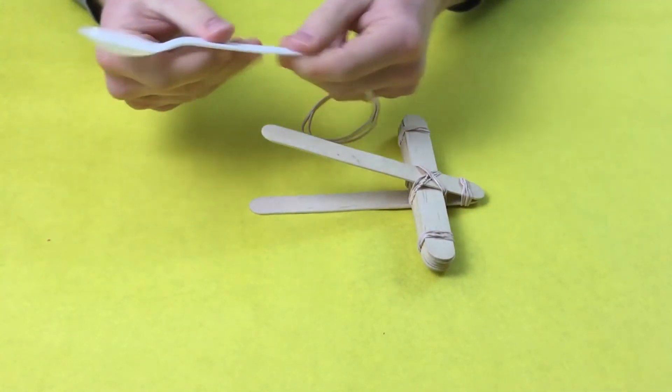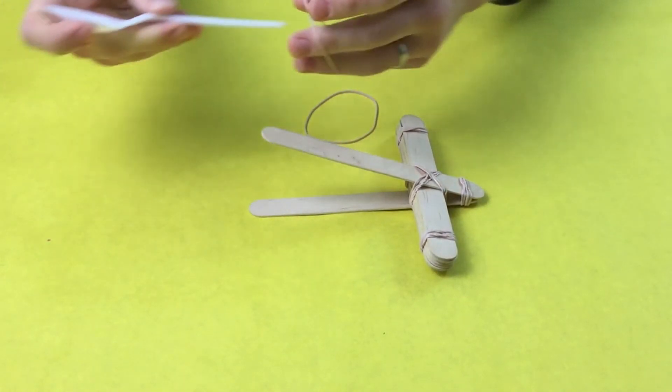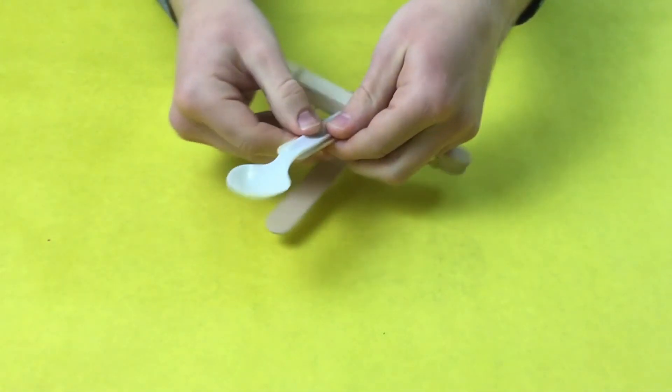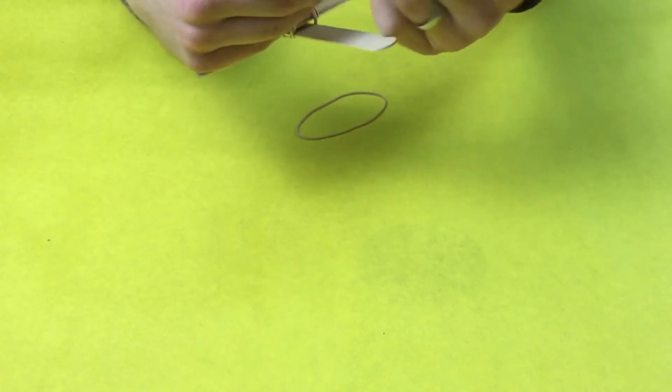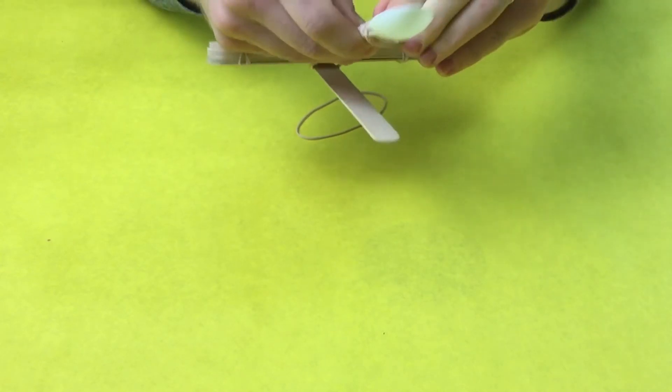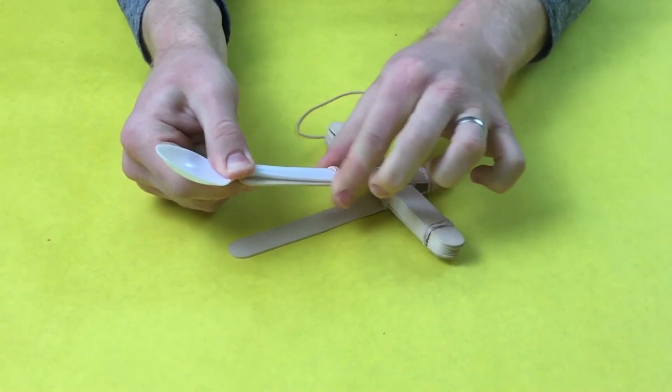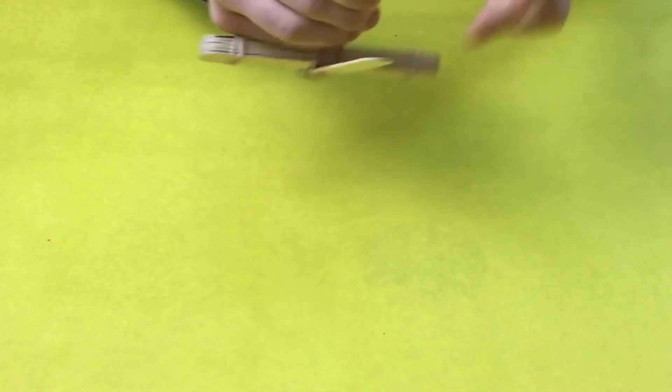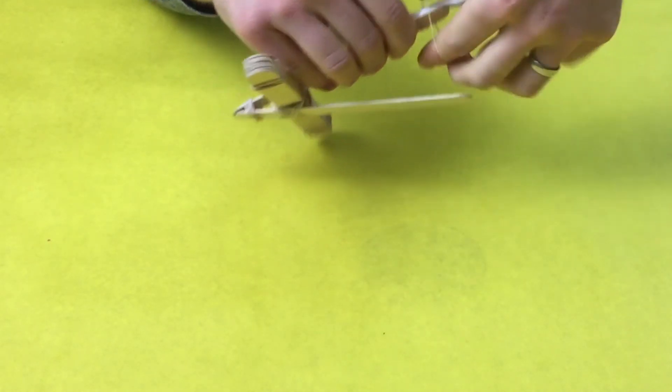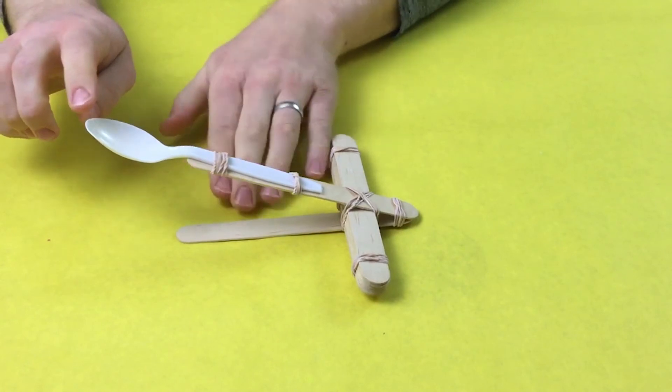Last step for our catapult is to take the spoon, put it on top here and rubber band that. I like to use two rubber bands for this to help make sure that the spoon really stays on there. So I'll do the first one, slide this one down to the bottom, and then the second one.